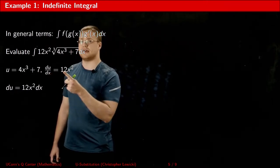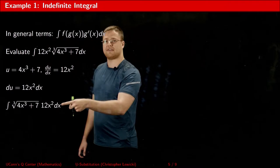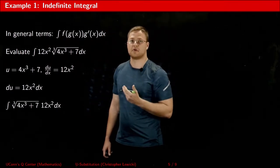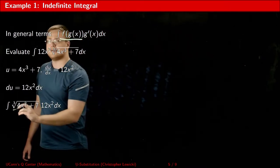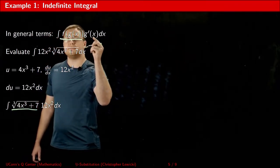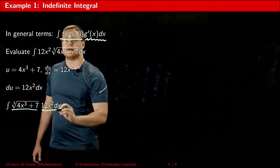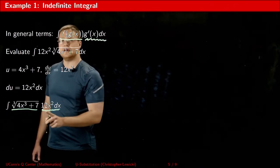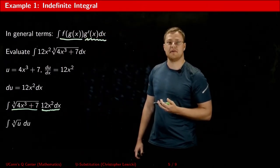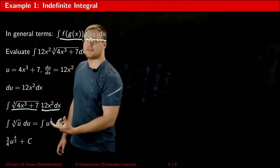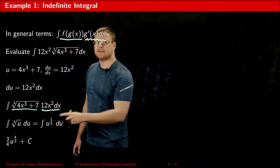If I multiply both sides by dx, I get du equals 12x squared dx. Rewriting my given integral this way, we can clearly see where the substitutions happen. My outside-inside function f of g of x is here, and my g prime of x dx is here. The inside part is replaced by u, and this part is replaced by du. Taking the cube root is the same as raising to the 1/3 power, and we now have something we can very easily integrate.